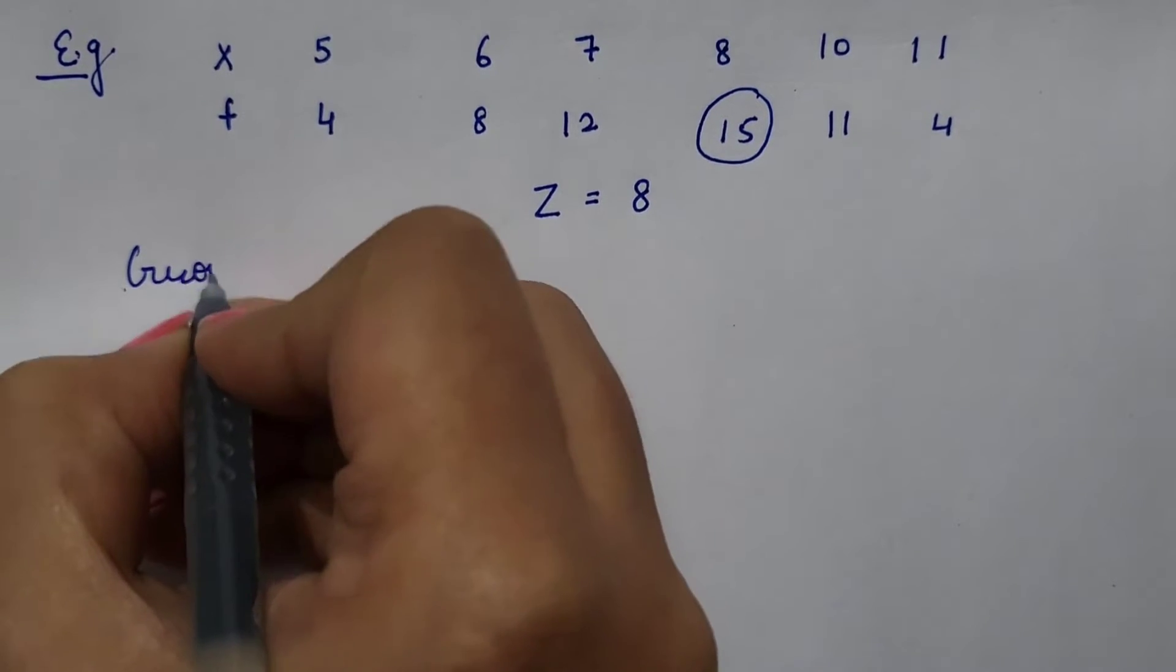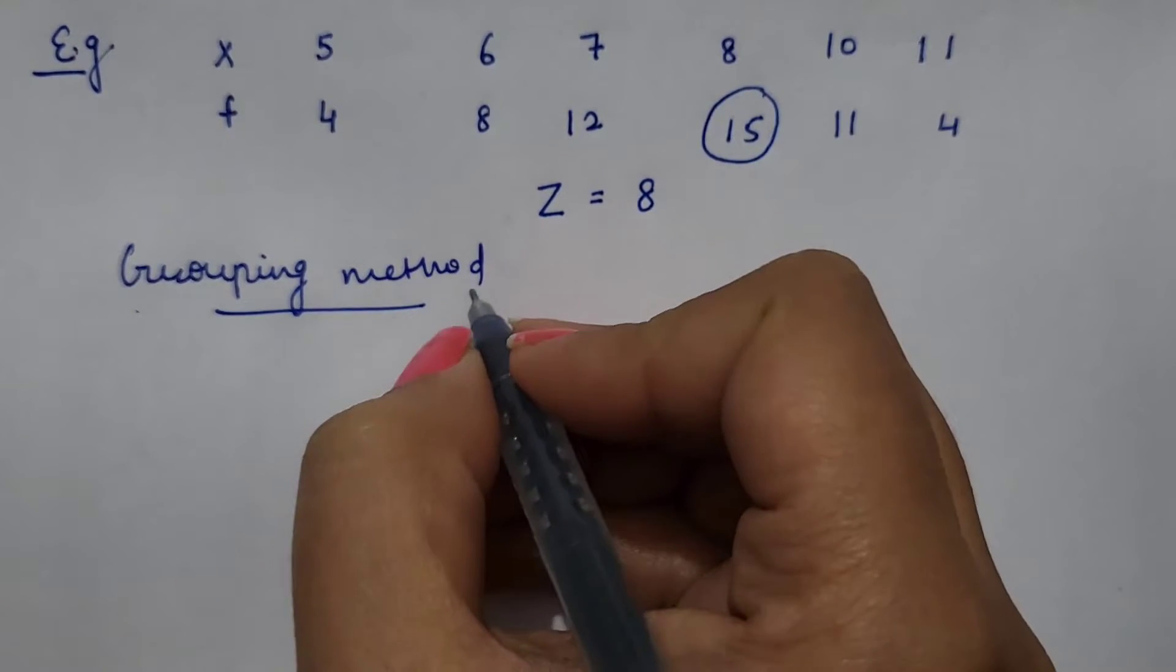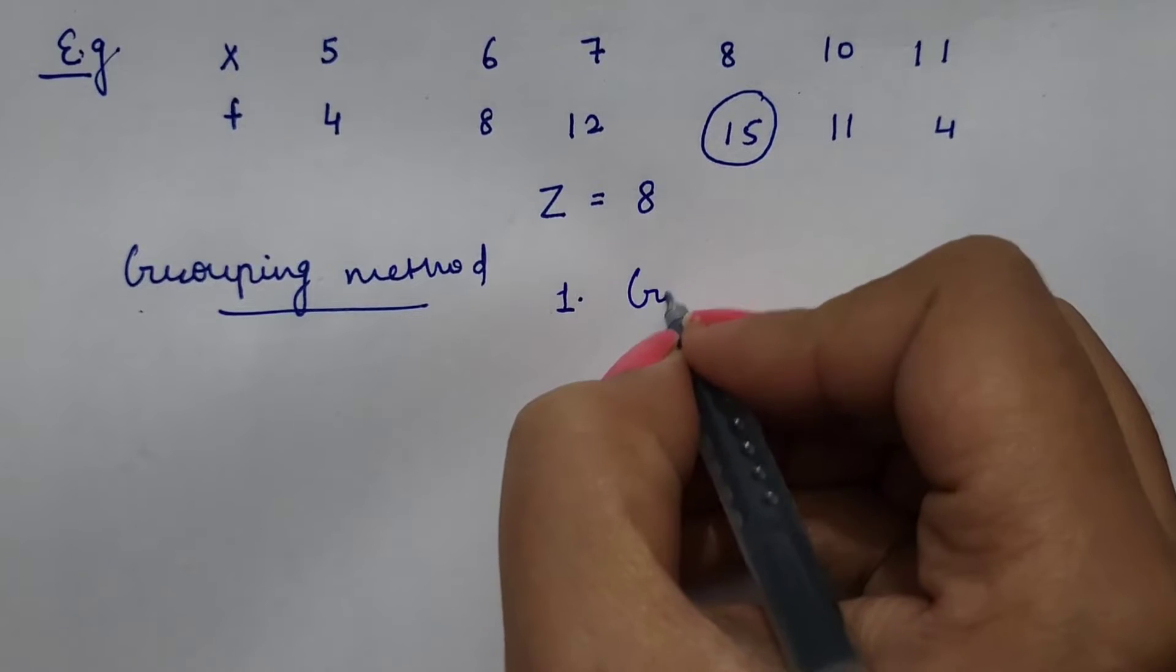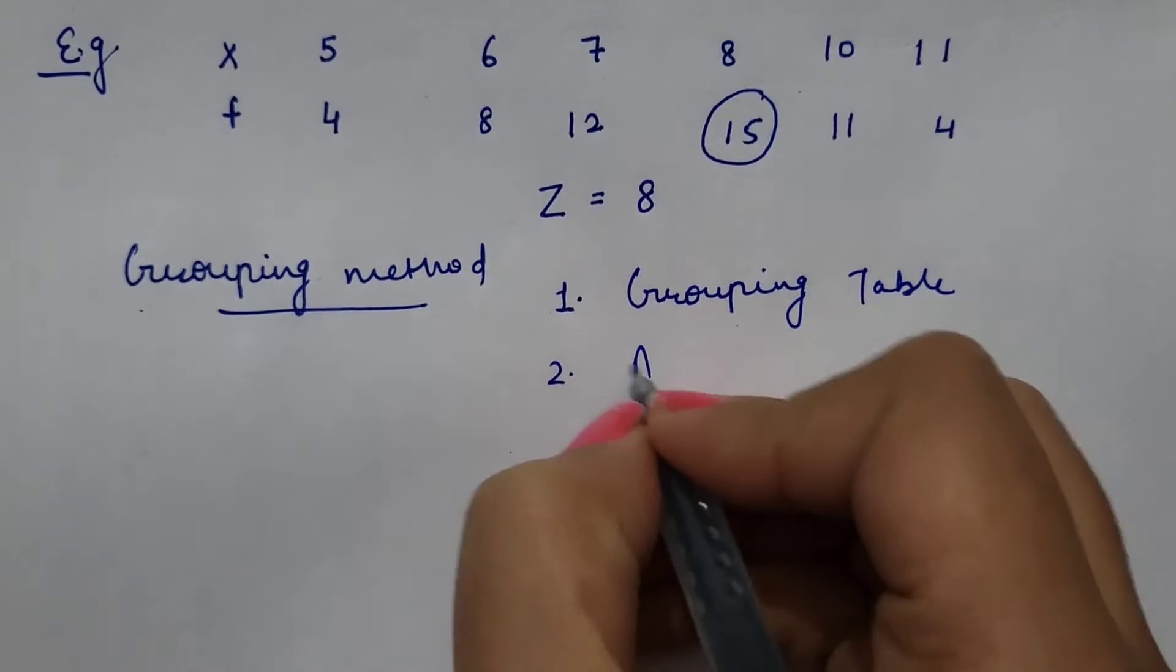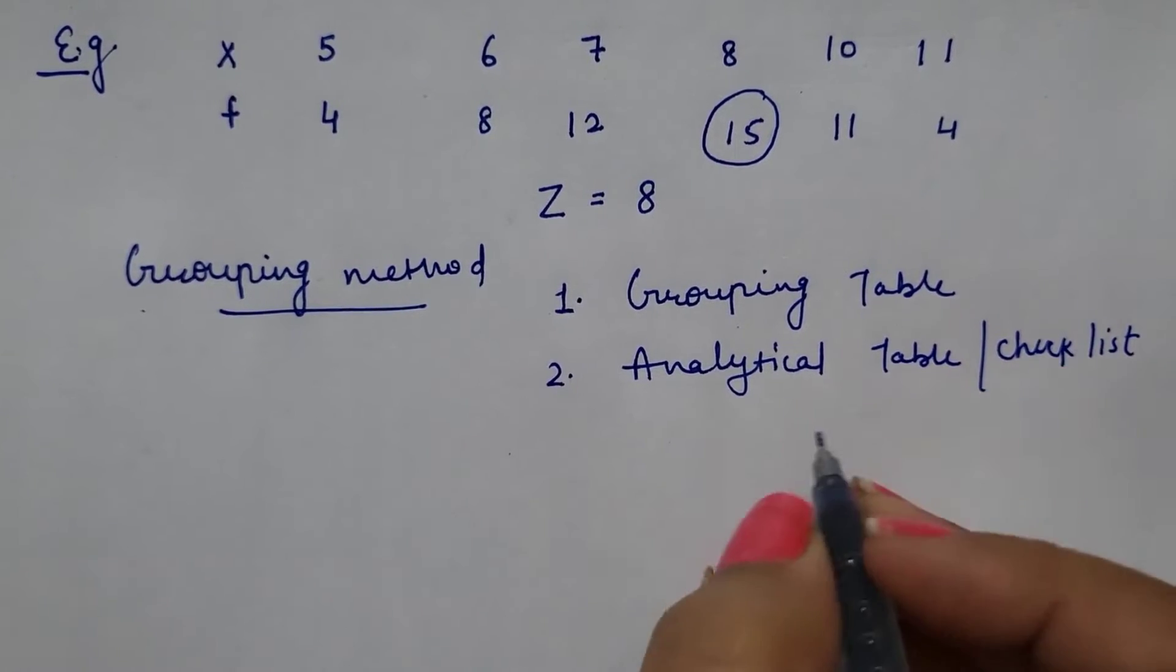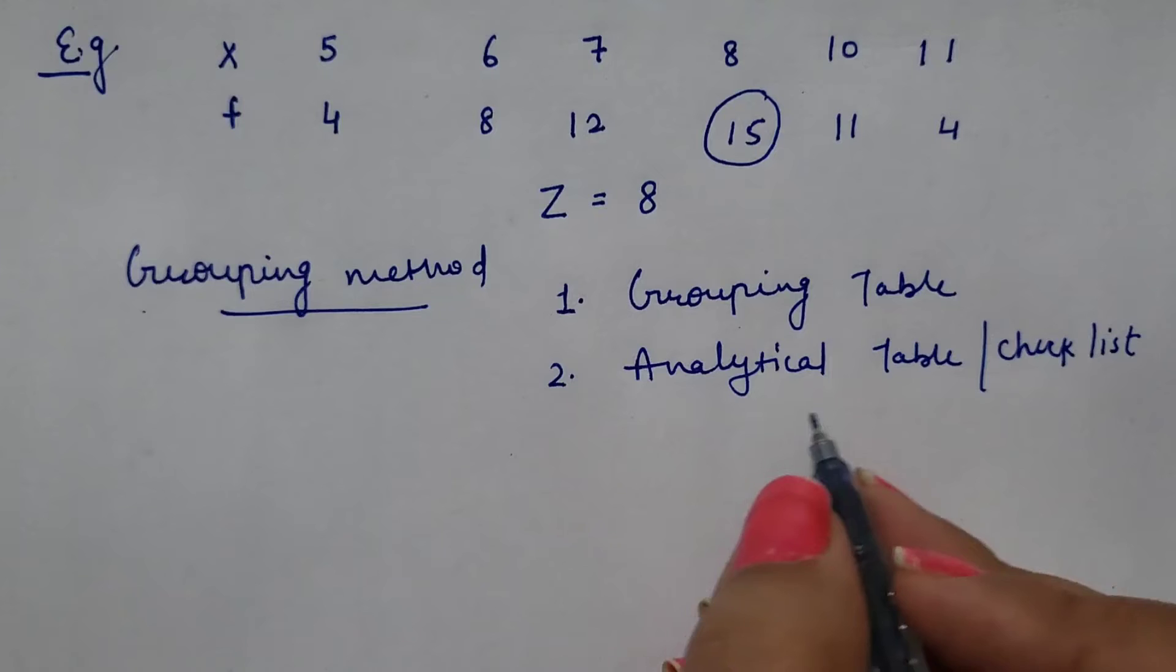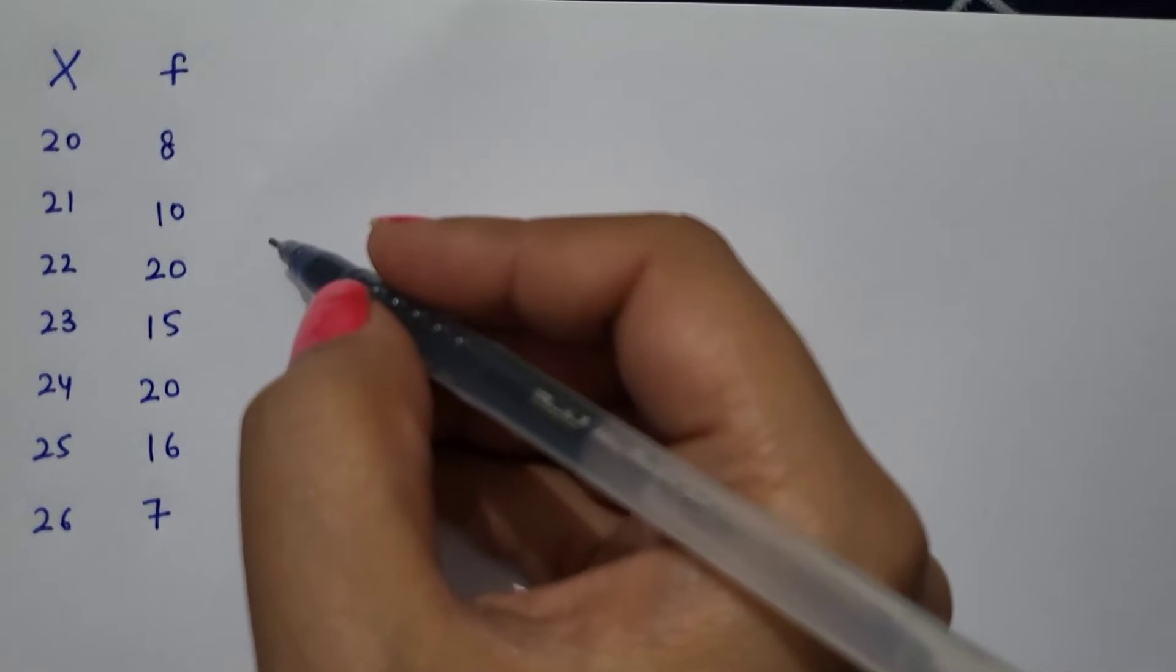Another method is grouping method. In grouping method, we need to first of all construct two tables. First table is grouping table and the second one is analytical table, or we can say it as checklist. With the help of example, I will clarify how to construct grouping table and how to prepare the checklist.